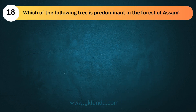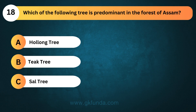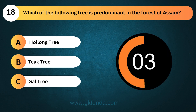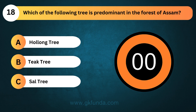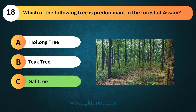Which of the following trees is predominant in the forests of Assam? The answer is option C, Sal tree.